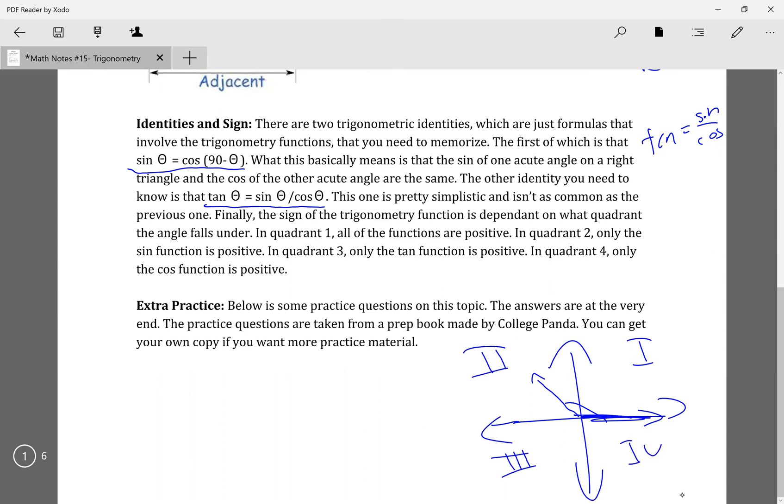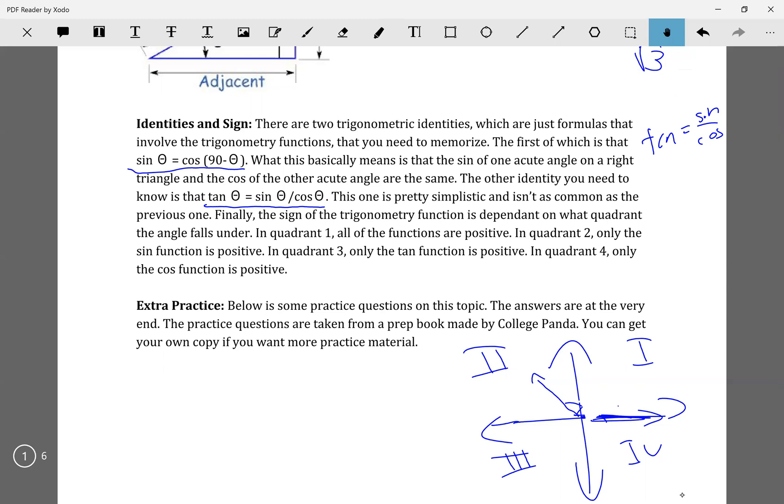What we know is that in quadrant one, if it's an angle like this, then all sine, tangent, and cosine are all going to be positive. However, if it's in quadrant two, then just sine is going to be positive. Here, all of them are positive. Here, just sine. In quadrant three, just tangent is positive. And in quadrant four, just cosine is positive.